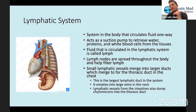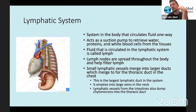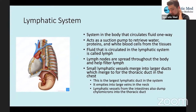It has a valve system so that there's no backflow. Smooth muscle contraction causes the fluid to move forward, and then the pressure pulls the fluid into the next chamber — that's basically how the lymphatic system is circulated throughout the body. The fluid in the lymphatic system is called lymph.